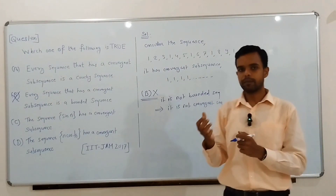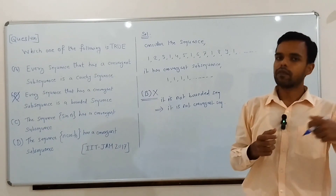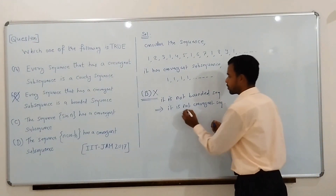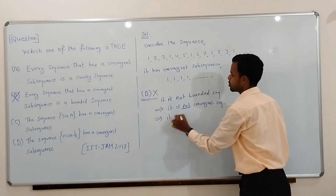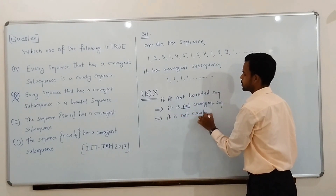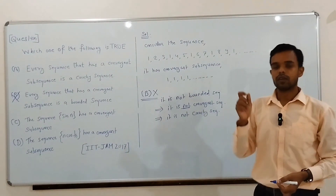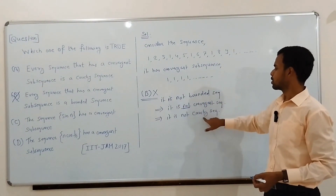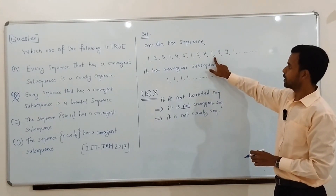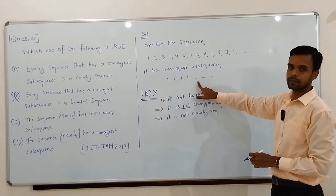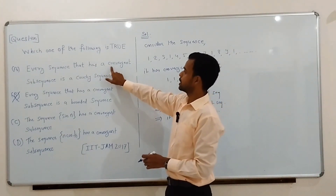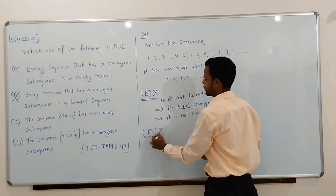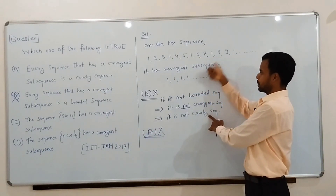This implies it is not a convergent sequence, because every convergent sequence is a bounded sequence. So, if the sequence is not bounded, then it is not convergent. Also, we know that a sequence of real numbers is convergent if and only if it is a Cauchy sequence. As it is not convergent, this implies it is not a Cauchy sequence. Thus, we have constructed a sequence that is not a Cauchy sequence but has a convergent subsequence.